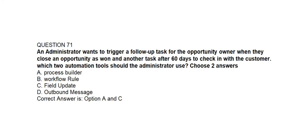Question number seventy-one. An administrator wants to trigger a follow-up task for the opportunity owner when they close an opportunity as won, and another task after 60 days to check in with the customer. Which two automation tools should the administrator use? Option A: Process Builder. Option B: Workflow Rule. Option C: Field Update. Option D: Outbound Message. Correct answer is Option A and Option C: Process Builder and Field Update.